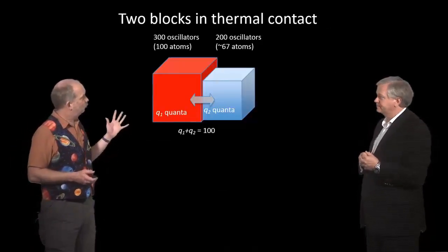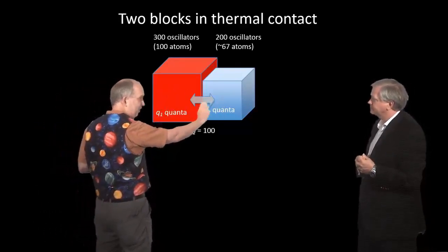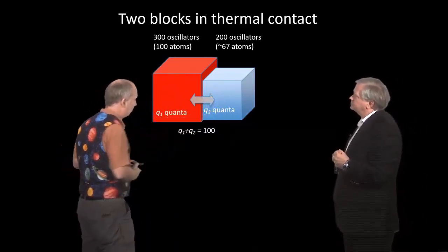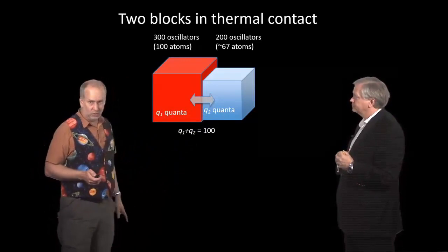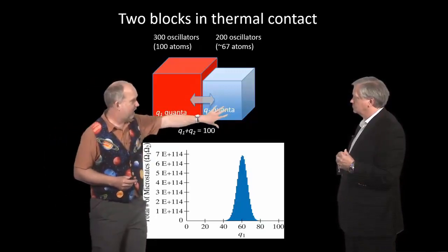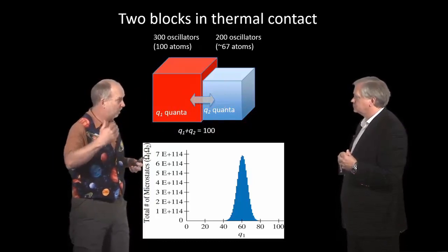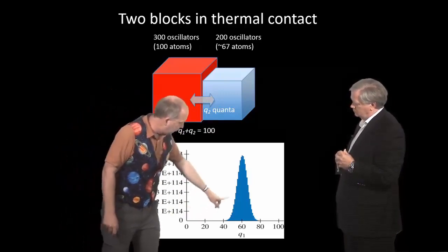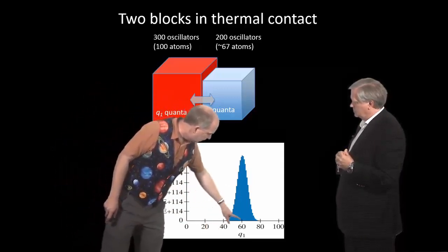So we can apply the same thing to a situation when we have two blocks. Let's make them a different size—one's two-thirds the size of the other. So let's say we've got 300 oscillators here and 200 oscillators there, so about 100 atoms and about 67 atoms. And we've got a total of 100 quanta to distribute between these two. Once again, we can do the sums, and you can work out the total number of microstates and multiply them together.